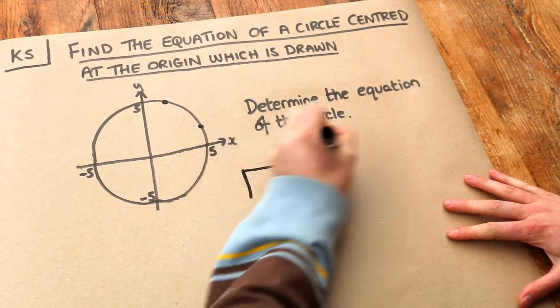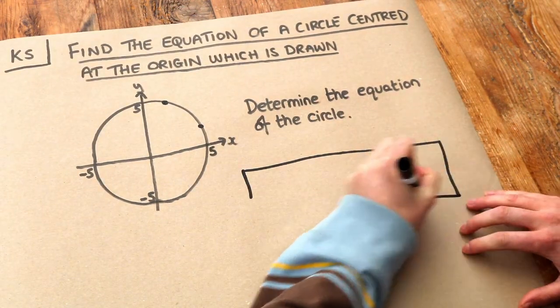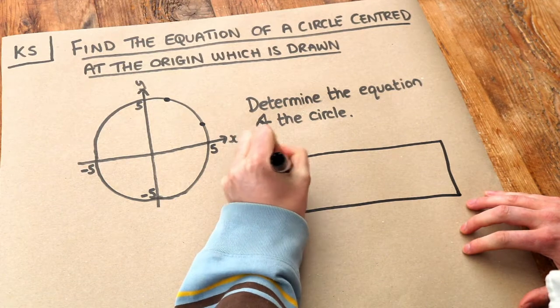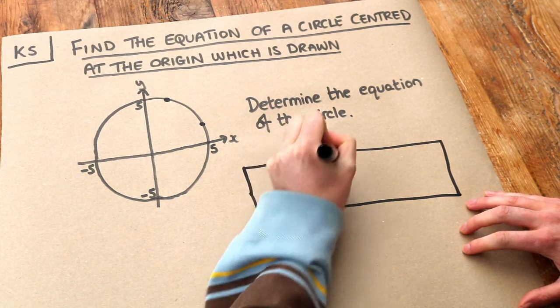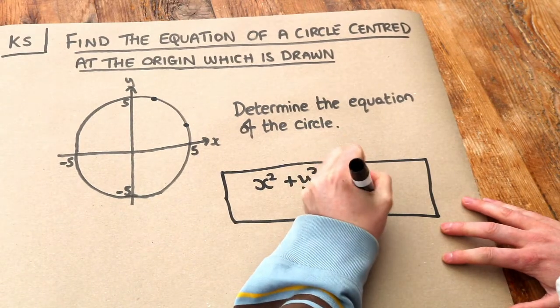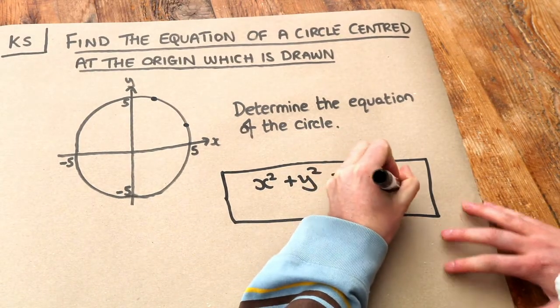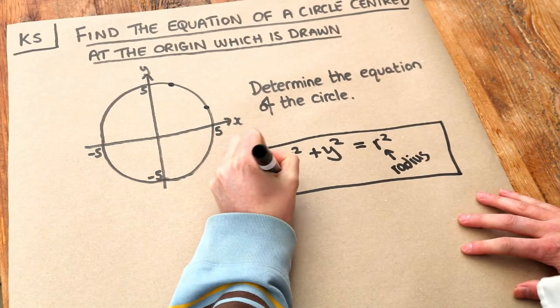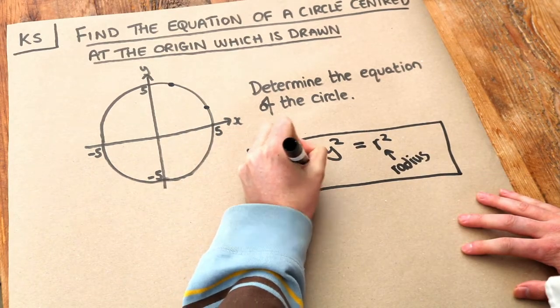Now the general equation of a circle centred at the origin is x squared plus y squared equals r squared, where r is the radius and the circle is centred at (0, 0).